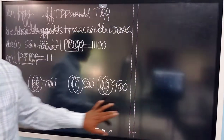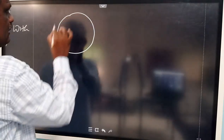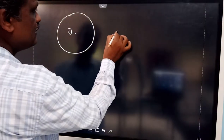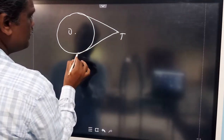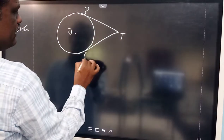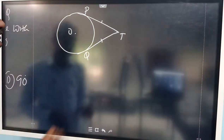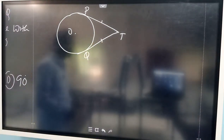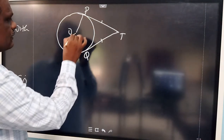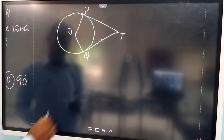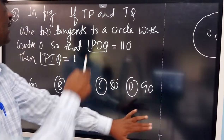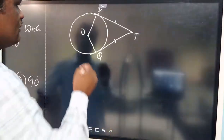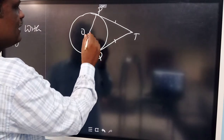The given diagram shows a circle with center O and two tangents TP and TQ drawn from external point T. Joining these forms a quadrilateral. The given angle POQ is 110 degrees, and we need to find angle PTQ.